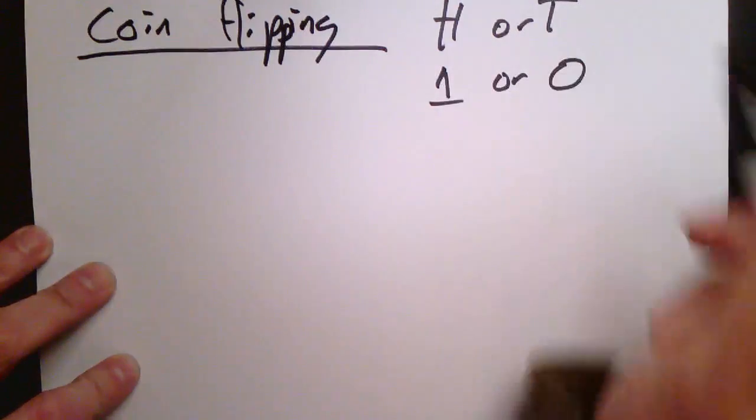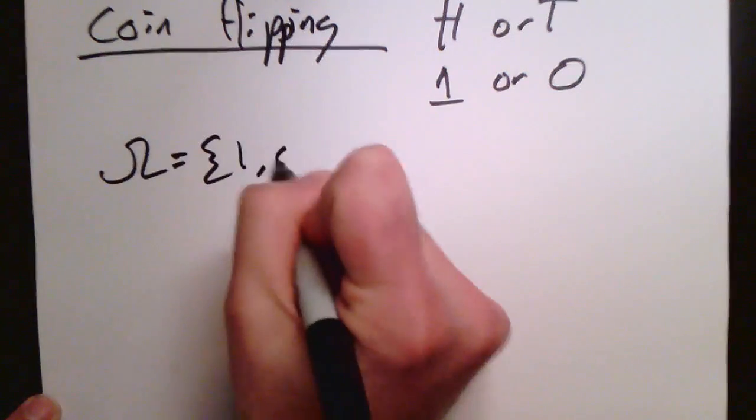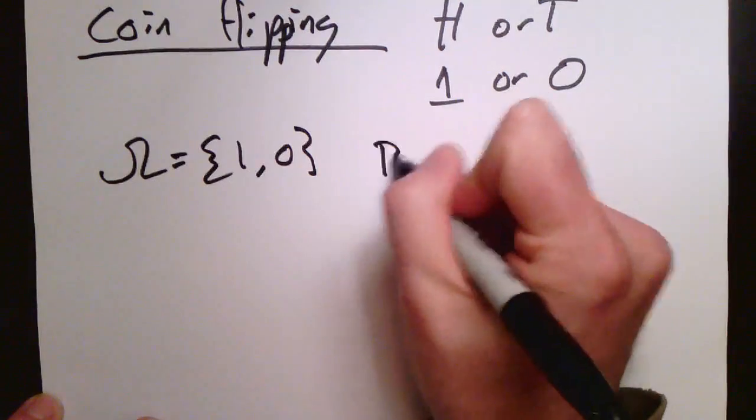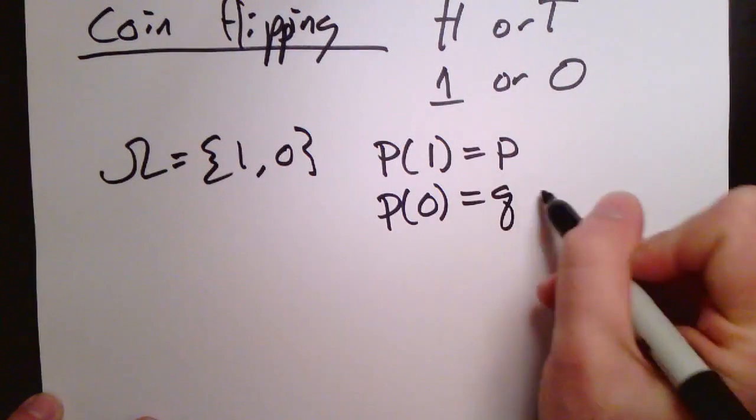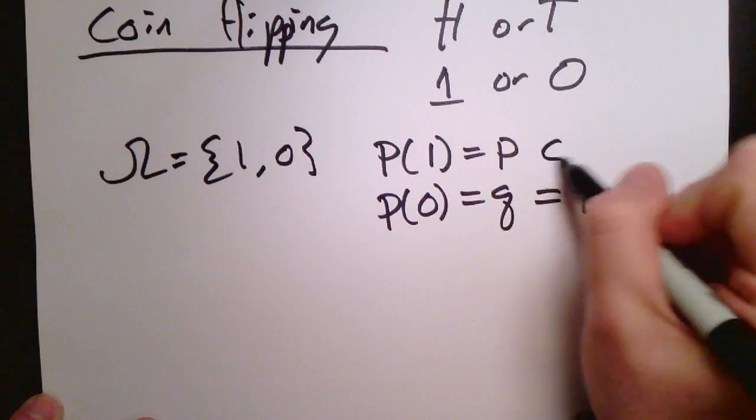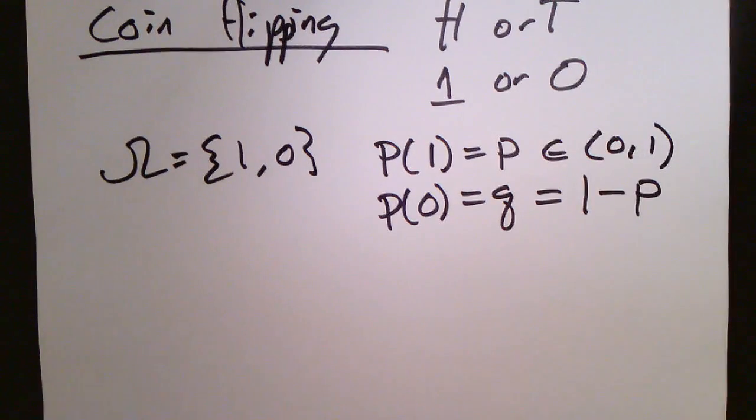And maybe we denote that by either a 0 or a 1, just generically. Now, there's some chance of getting a head, and there's some chance of getting a tail. So we have this outcome space of {0, 1}, and we define the probability of getting a 1 to be p, and the probability of getting a 0 to be 1 minus p, usually denoted by q.